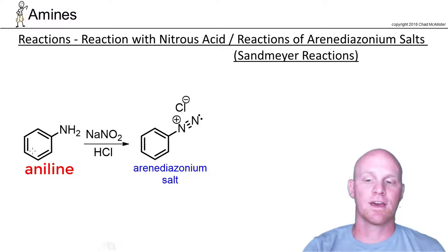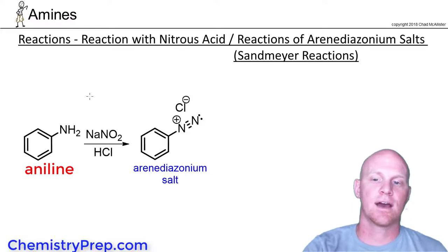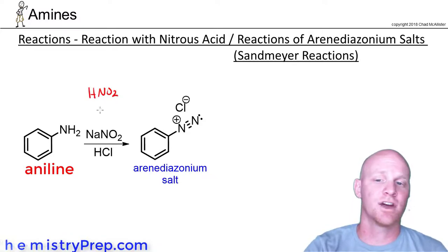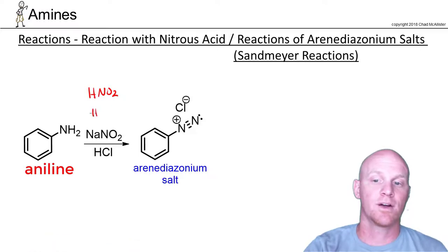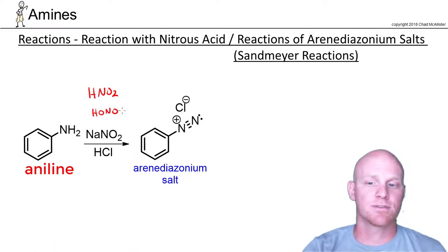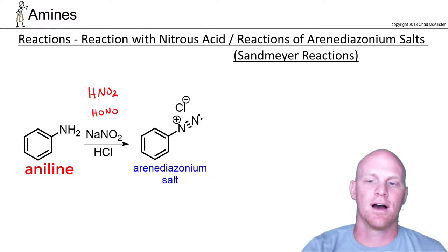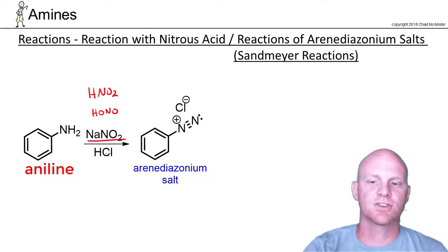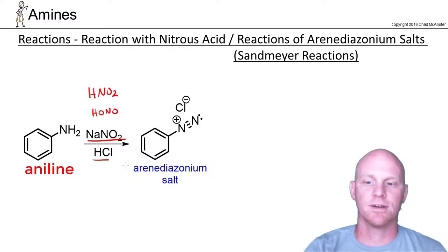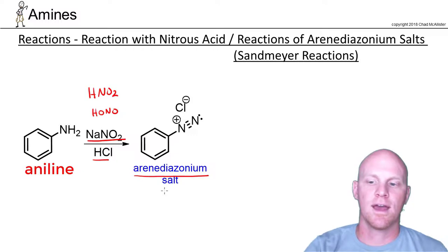If you start with aniline, we add nitrous acid — HNO2, probably how you saw it in Gen Chem — you might also see it written as HONO. In this case we're mixing sodium nitrite and a strong acid like HCl or HBr, which is most common. With aniline as the starting material, you form a fairly stable arene diazonium salt.